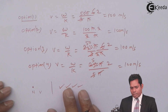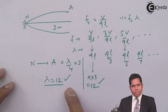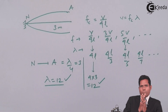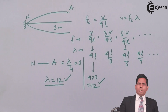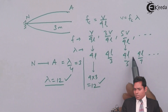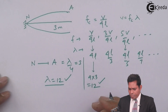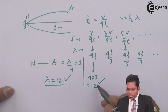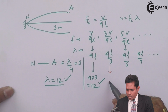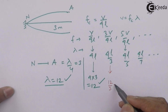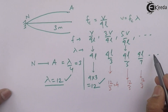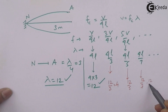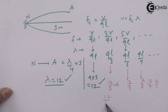Since we are looking for valid wavelengths, the modes of vibration of the string must be odd multiples of the fundamental frequency — even harmonics are not present. The valid wavelengths are 12, 12/3=4, 12/5, 12/7, 12/9, 12/11, 12/13, 12/15, and so on. Now we check which option gives a wavelength from this set.